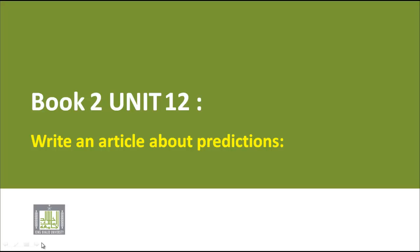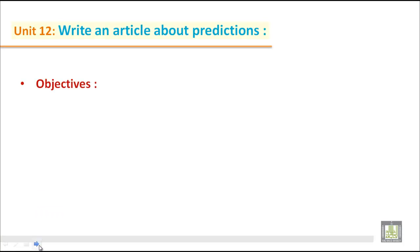Bismillahirrahmanirrahim. Book 2, unit 12. Write an article about predictions. So dear students, today we'll practice to write an article about predictions. That means what will happen in future. So prediction means to tell about future.